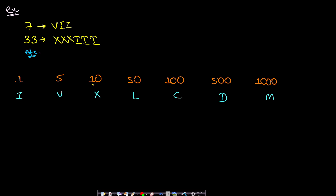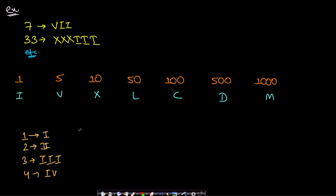Let's understand the Roman notation by building from 1. For one it's just I, for two it's II, for three it's III. But for four, it is not three I's — it is I followed by V. When you write I on the left side of V, it means you are subtracting the left-hand value from V, so 5 minus 1 equals 4. This is the subtractive notation.